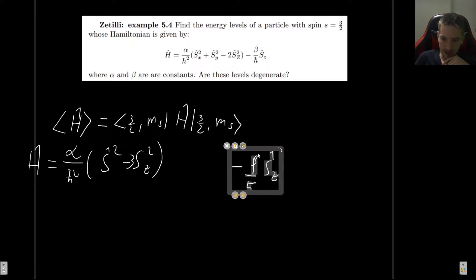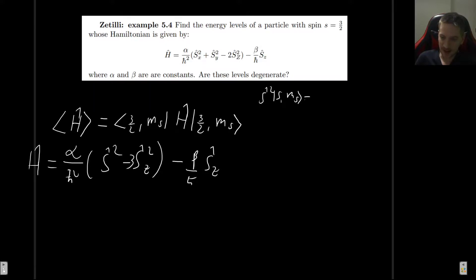And let's note that we know what each of these operators do when it acts on a ket. So just as a quick reminder, s squared, when it acts on some s, m_s state, this gives us h-bar squared s(s+1). And s_z acting on some ket s, m_s will give us h-bar m_s. Okay, just as a reminder.